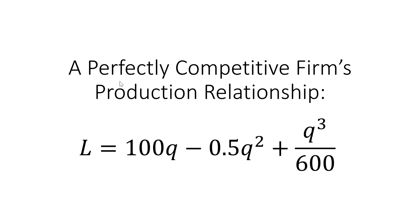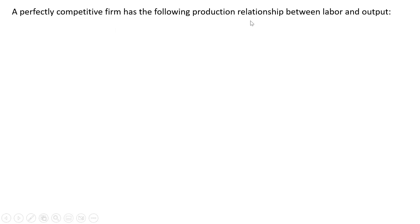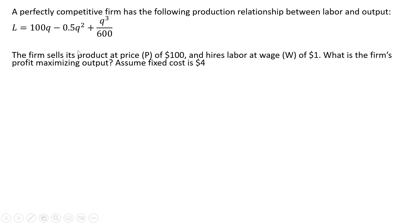Hello. In this video we're going to do a problem where we have a perfectly competitive firm with the following production relationship: L is units of labor and Q represents the firm's output. The firm sells its product at a price of $100 per unit and hires labor at a wage of $1. What is the firm's profit-maximizing output? We'll assume the firm has fixed cost equal to $4.